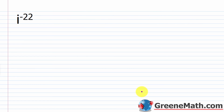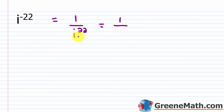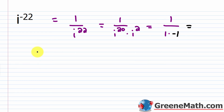What about i raised to the power of negative 22? Don't be scared by a negative exponent — take the reciprocal of the base and make the exponent positive: that gives 1 over i to the 22nd power. Now, is 22 divisible by 4? No. Is 20? Yes. So we write 1 over i to the power of 20 times i squared. Since i to the 20th power is 1, we get 1 over (1 times negative 1), which is 1 over negative 1, which equals negative 1.